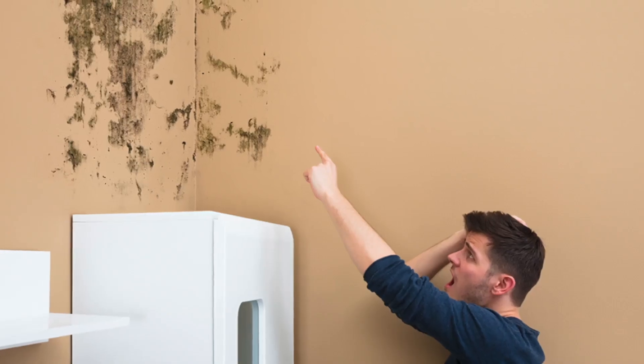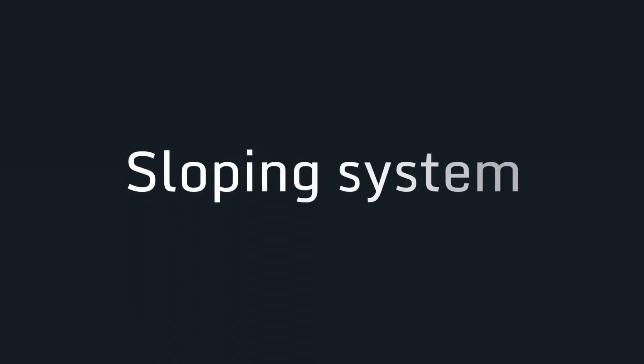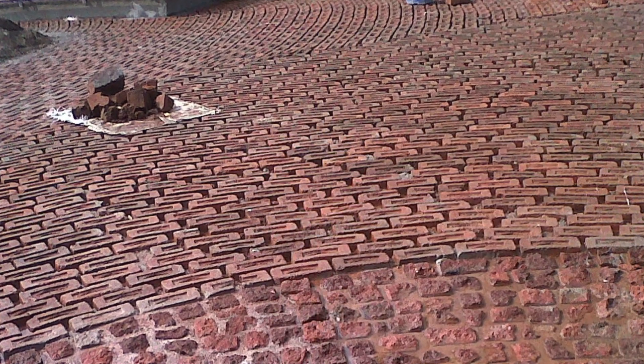Nobody thinks that deeply about waterproofing before this kind of class, and there are a lot of myths around waterproofing — even in the 21st century. In India, waterproofing is mostly done using sloping systems. When you have a terrace slab or bathroom slab, a brick bed is laid on top which creates a slope to let water drain out, and this is considered as waterproofing.